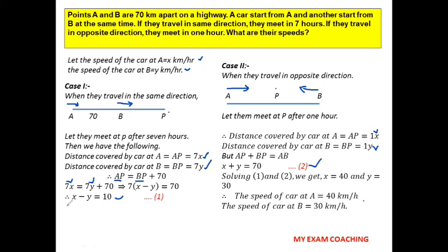Solving x − y = 10 and x + y = 70, we get x = 40 and y = 30. So the speed of the car at A is 40 km/h and the speed of the car at B is 30 km/h. This type of question carries 5 marks in your board exam — kindly note it.